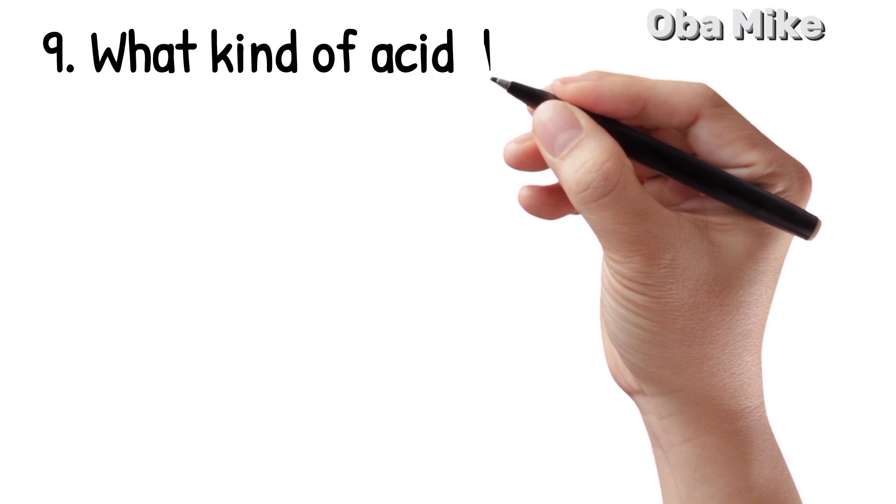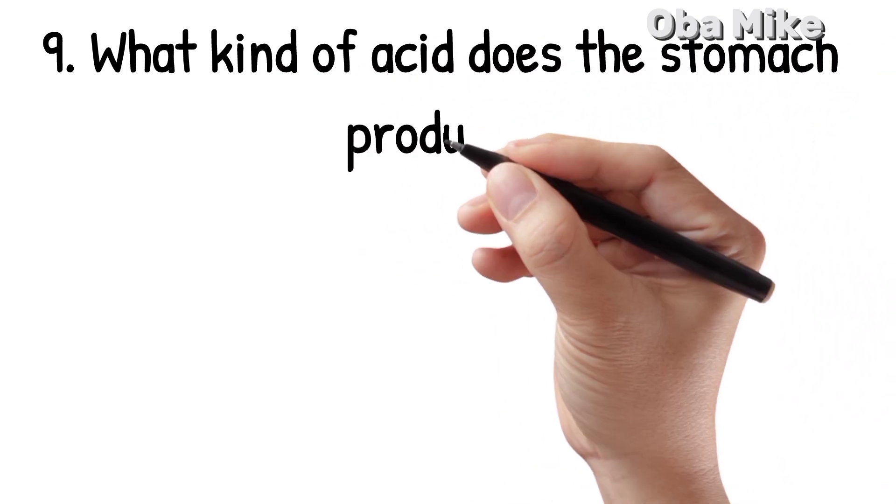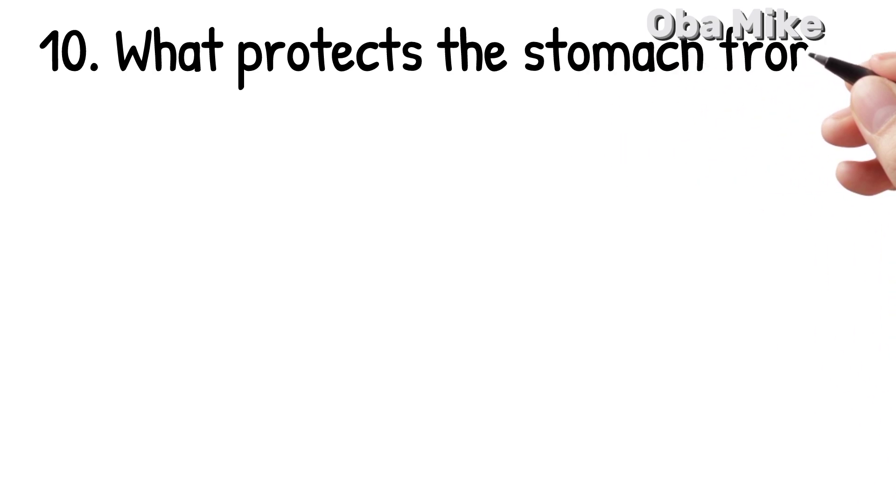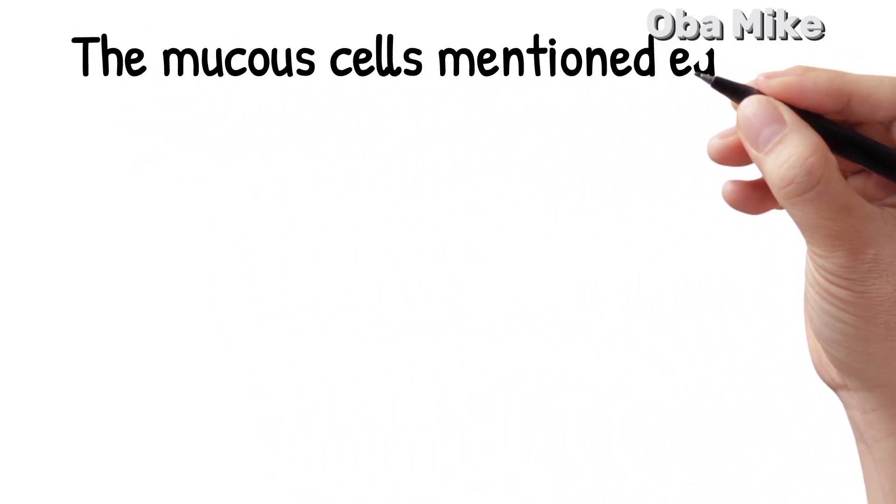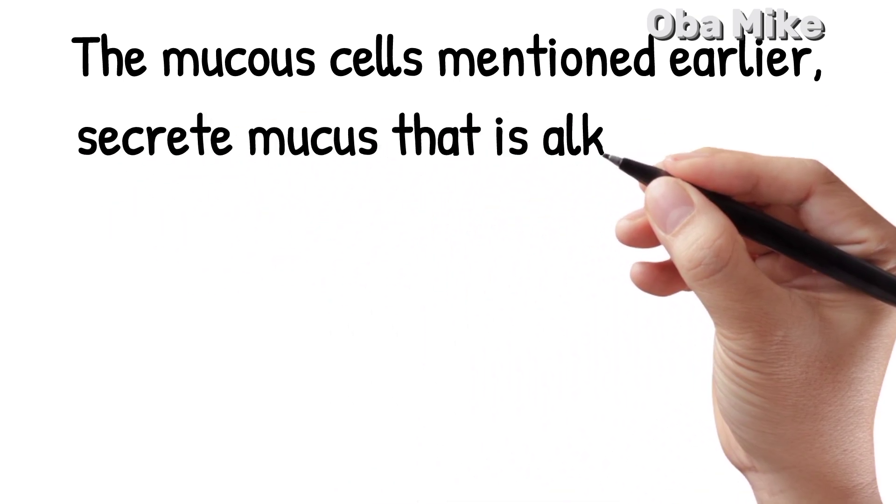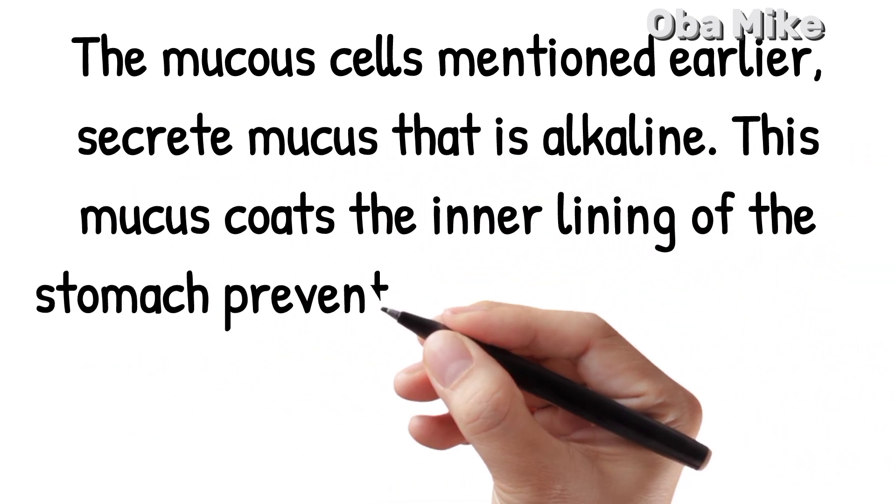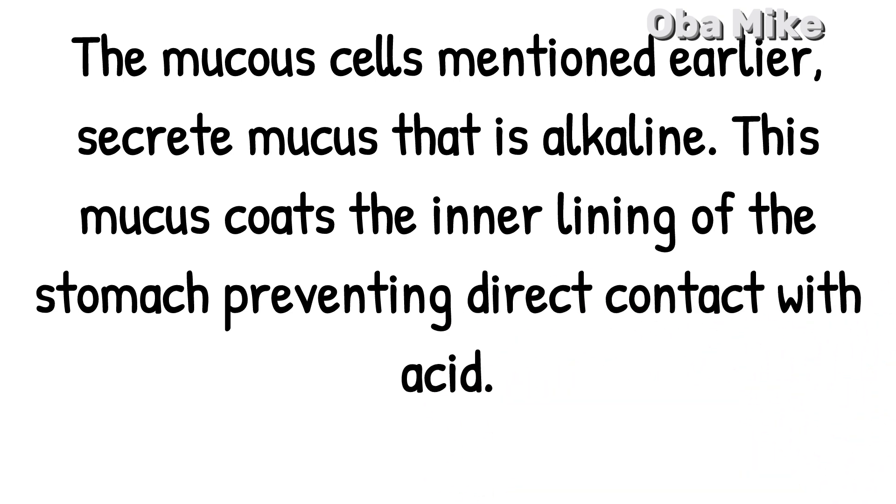Number 9. What kind of acid does the stomach produce? Number 10. What protects the stomach from its own acid? The mucus cells mentioned earlier secrete mucus that is alkaline. This mucus coats the inner lining of the stomach, preventing direct contact with acid.